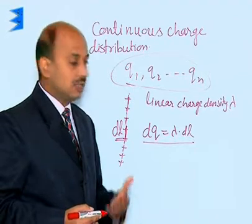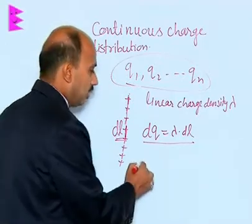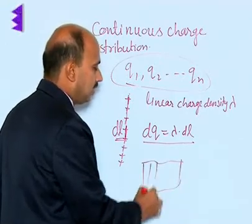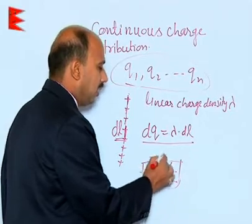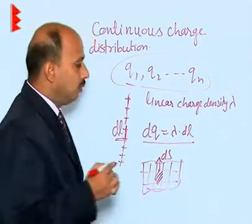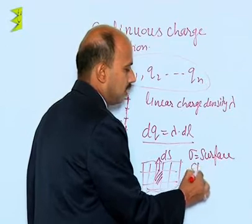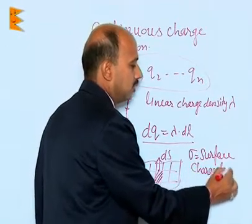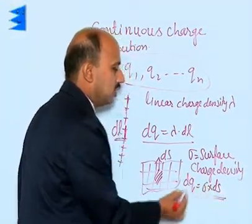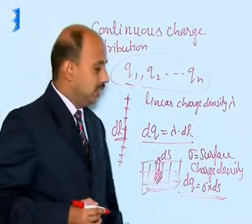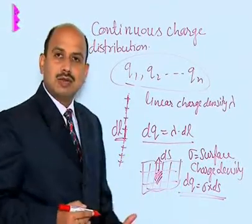Suppose the charges are distributed on the surface of the body, then we can take surface charge distribution. We take a small area element DS, and sigma is the surface charge density. Then we can write DQ is equal to sigma into DS. So, the charge on this small area is DQ equals sigma times DS. We have now covered linear charge density as well as surface charge density.